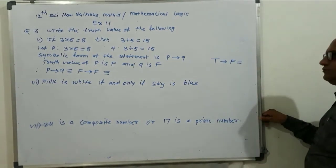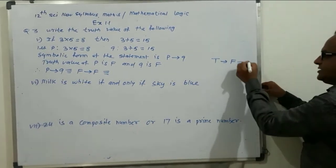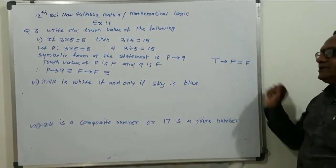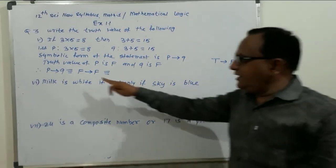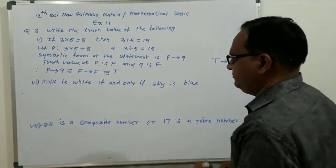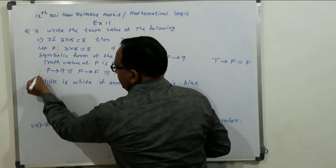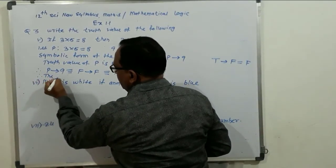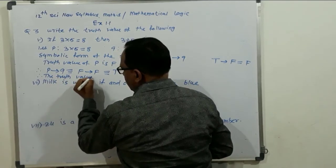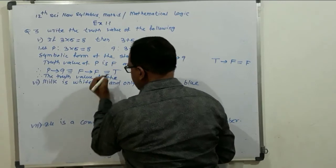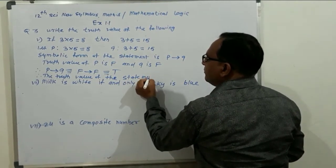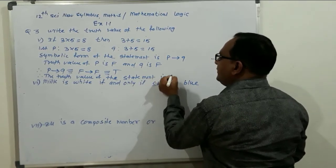In the truth table of implication, when P is F and Q is F, the implication is T — because implication is false only when P is T and Q is F; in all other cases it is true. Therefore, the truth value of the statement is T.